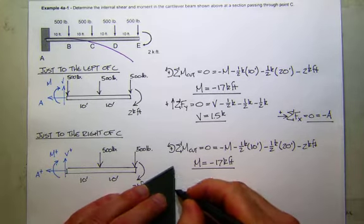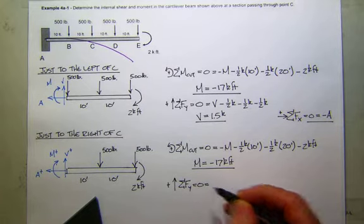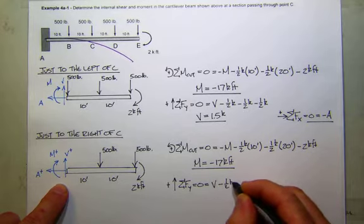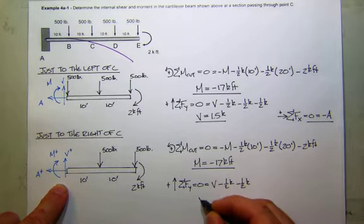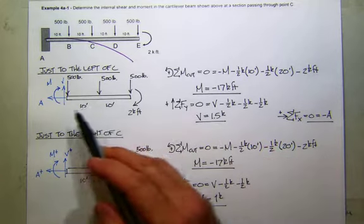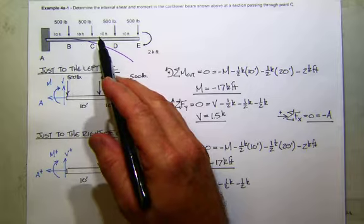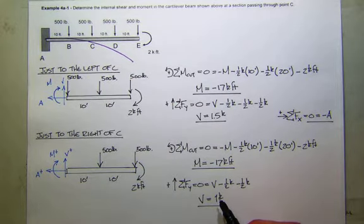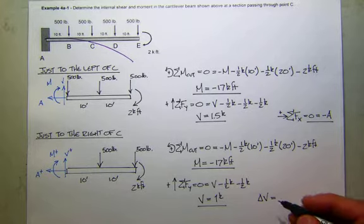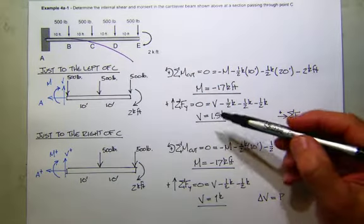So it looks like the moment is unaffected as I go from the left side to the right side and pass underneath, or pass by, an applied load. There's no sudden change in the moment. Okay? Let's see what happens with our shear force. So now I'll sum forces in the y direction. Let's see what I've got. So I've got the shear force acting up. I've got one, two, half kip forces acting down. So it looks like the shear now is one kip. So the shear to the left of C is 1.5 kips. And then as I pass underneath, it drops down to one kip. So it looks like the change in shear is equal to what? The applied force. In this case, 500 pounds.